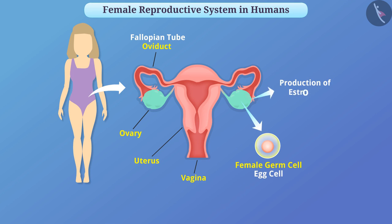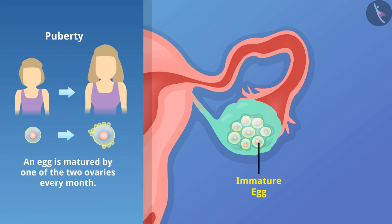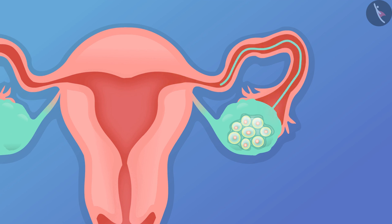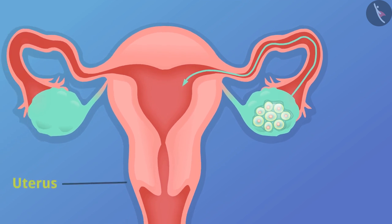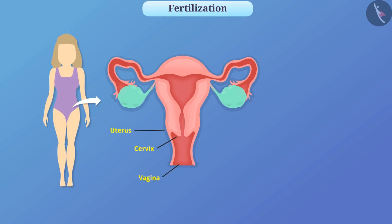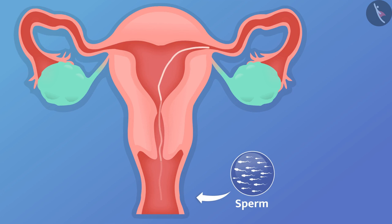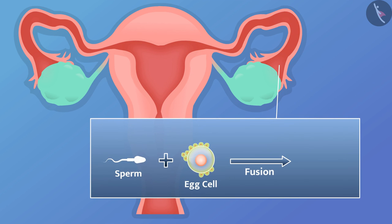Various hormones such as estrogen are also produced in the ovaries. From the birth of a girl, there are many immature eggs present in the ovaries, and they begin to mature at puberty. An egg is matured by one of the two ovaries every month and is carried by the fallopian tube into an elastic bag-like structure called the uterus. The uterus and the vagina are attached to the cylinder-shaped cervix. During sexual intercourse, sperm are transported from the male's body to the vagina and reach up to the oviduct. In the fallopian tube, fusion of sperm and egg cell may occur — we call this fertilization.